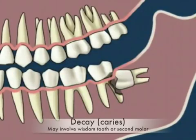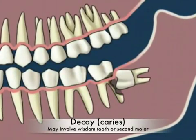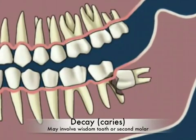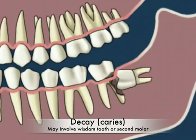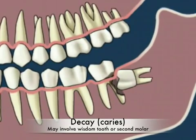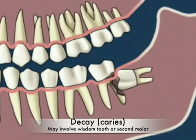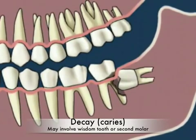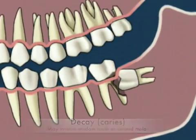Decay or caries can also occur on wisdom teeth or on the root surface of the second molars. This is sometimes near impossible to treat. If decay happens on the second molar, it often has to be extracted too.